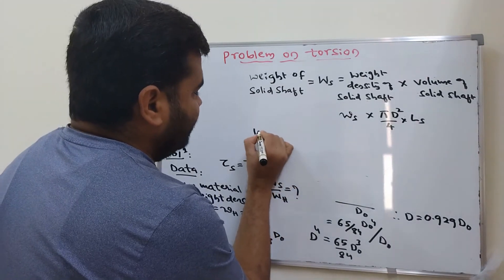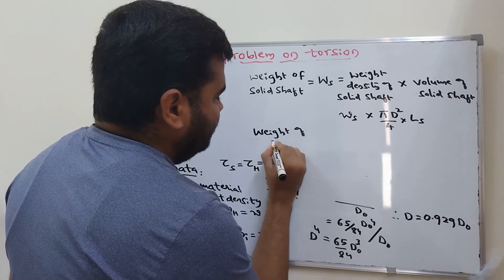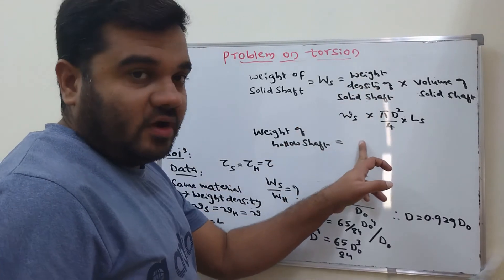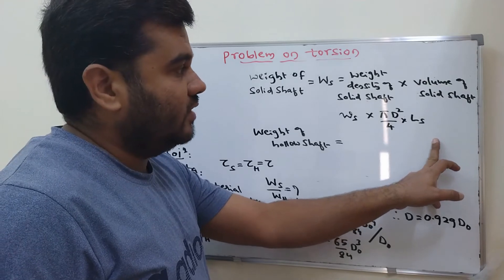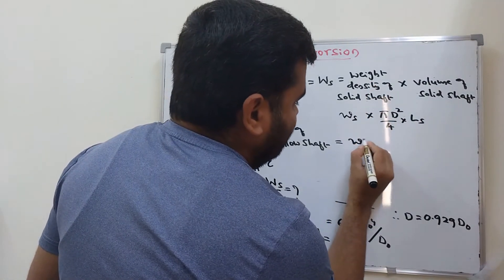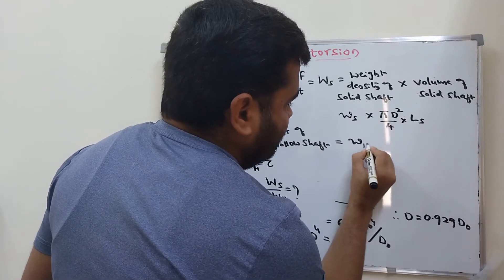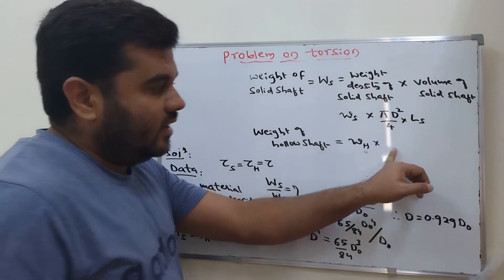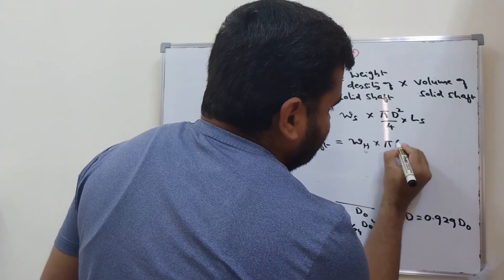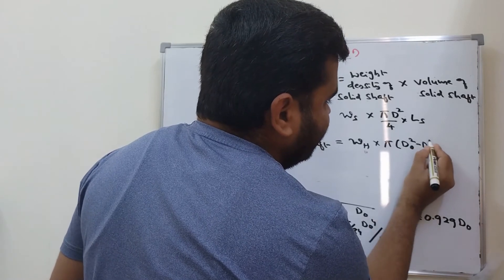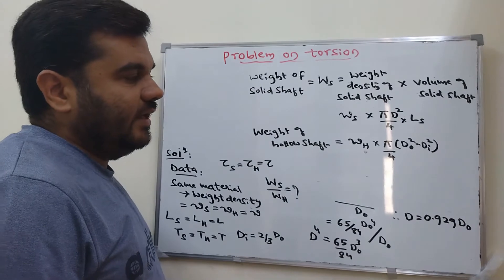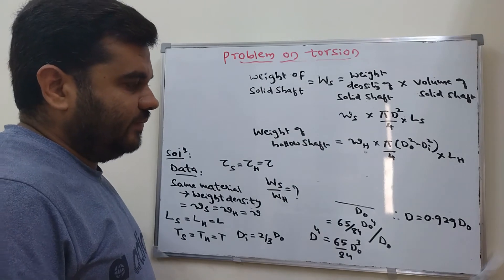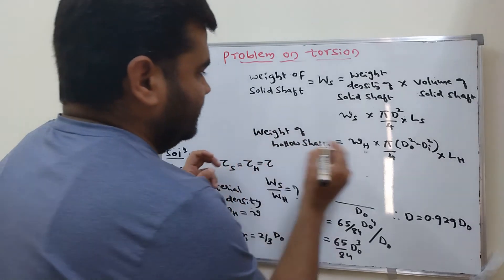Weight of hollow shaft equals weight density of hollow shaft multiplied by volume of hollow shaft. The area of the hollow section is π(D_o² − D_i²)/4. So weight of hollow shaft = w_h × π(D_o² − D_i²)/4 × L, where L is the length of the hollow shaft.